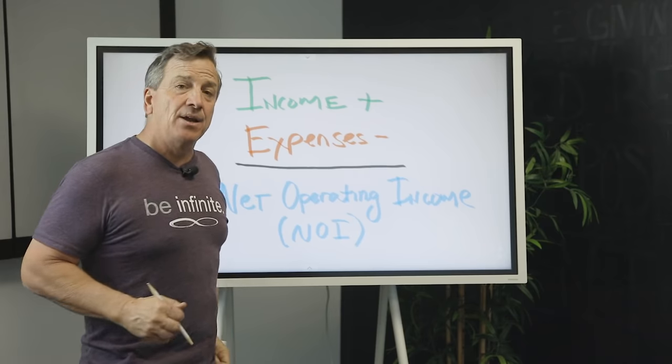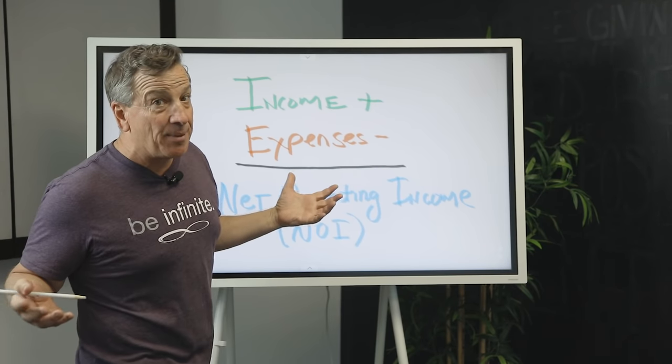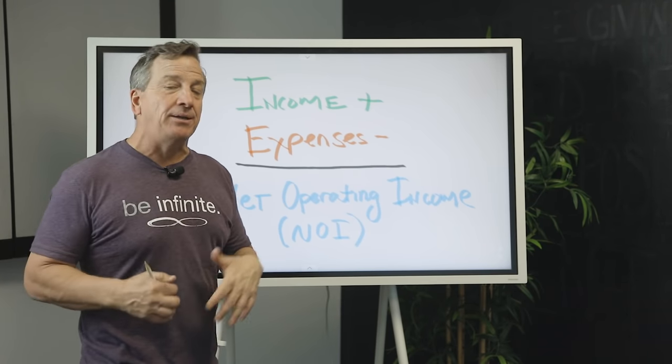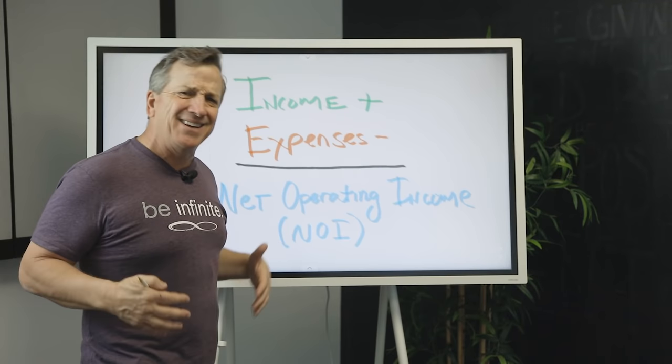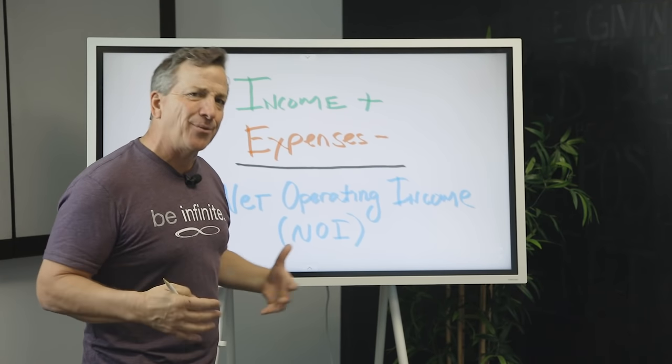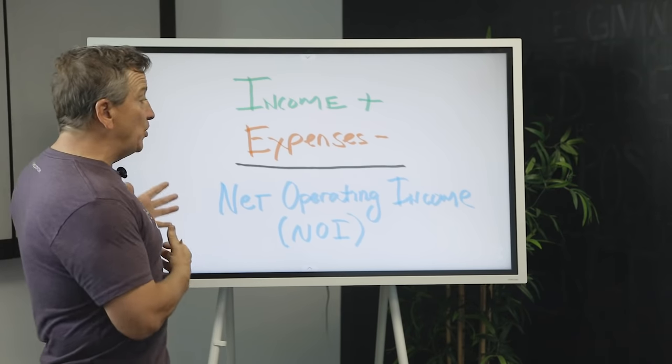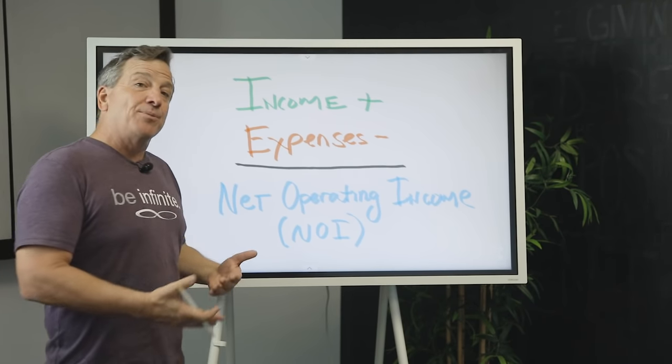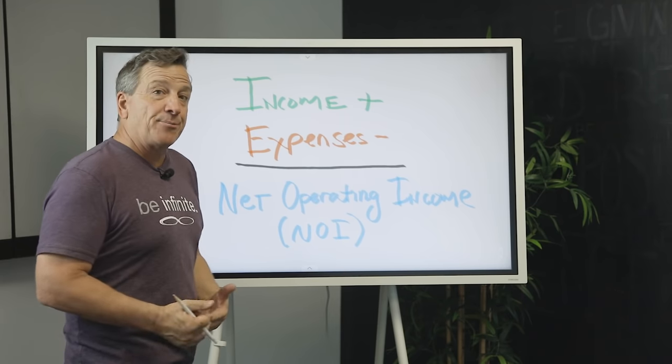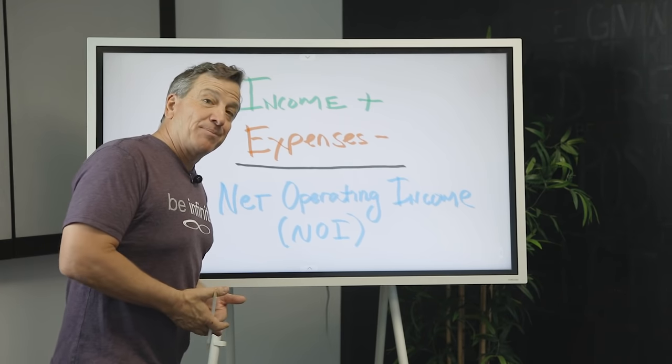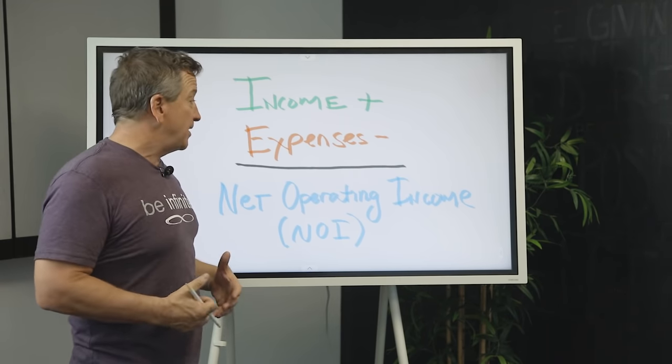The expenses are, of course, everything that you would think about. Expenses would be marketing costs and utilities and property taxes, insurance and payroll and management fees, all that stuff. You have a personal net operating income. Your businesses definitely have a net operating income. Your investment properties definitely have a net operating income.